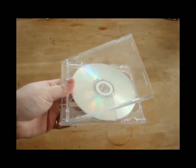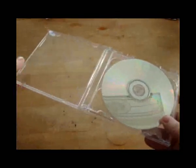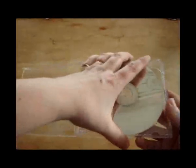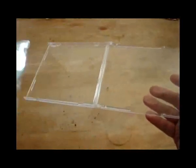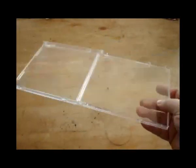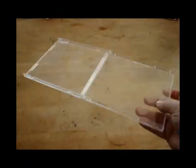The first part of this project is to create the base. For the base, we're going to take our CD cases and take out the papery bits that are inside. We're going to pop out the part that has the CD in it, and all we're left with are the jewel cases.